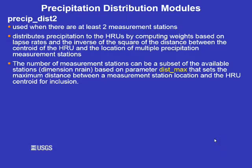The precip_dist2 module distributes precipitation by computing weights based on lapse rates and the inverse of the square of the distance between the centroid of the HRU and the location of multiple precipitation stations. The parameter dist_max sets the distance between a measurement station and the HRU centroid for inclusion. If you are going to use this method, you should read the manual for further information.